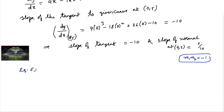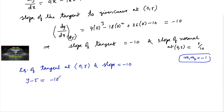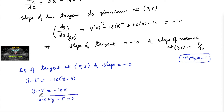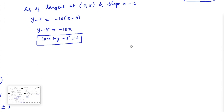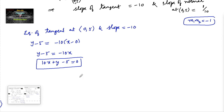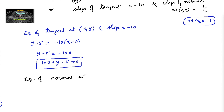Now let's find the equation of the tangent at (0, 5) with slope equal to -10. Using y - y₁ = m(x - x₁): y - 5 = -10(x - 0), which gives 10x + y - 5 = 0. This is the equation of the tangent.